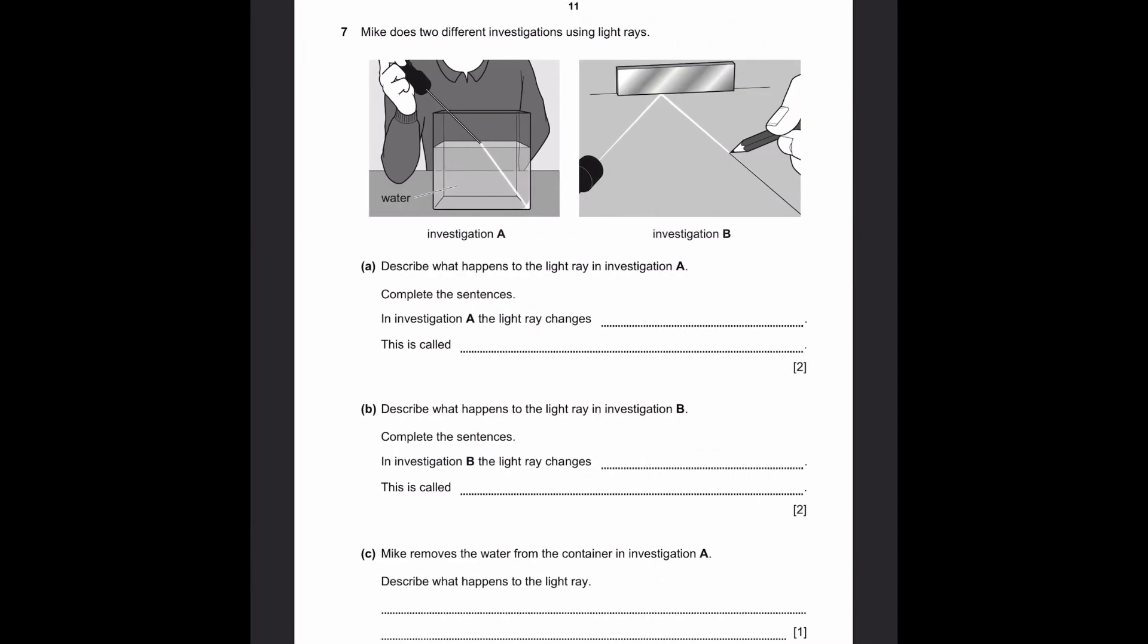Let's go to question 7. Mike does two different investigations using light rays. Describe what happens to a light ray in investigation A. In investigation A, the light ray changes direction. This is called refraction. That's the change in the direction of light as it passes from one medium to another. In this case, it's from air to water. We can see that the light travels through air until it touches the water's surface. Then it refracts, bends, and goes through a new medium, which is water.